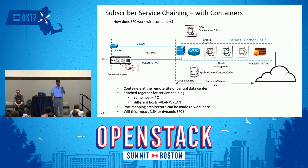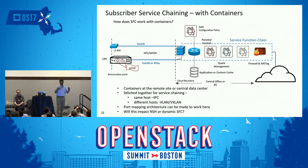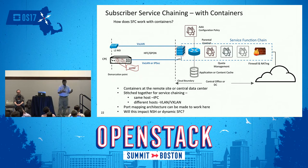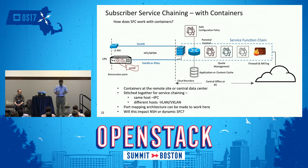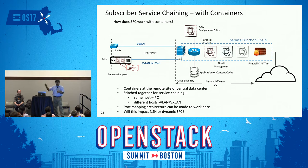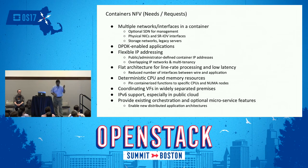On subscriber service chaining: for residential, business, or mobile services to be stitched together, you need to take VNFs and chain them. In the container context, if VNF functions are on the same host, you can use IPC to stitch them together or do orchestrated service chaining through Kubernetes itself — which we'll show in the POC. For different hosts, you can use standard VLAN and VXLAN models.